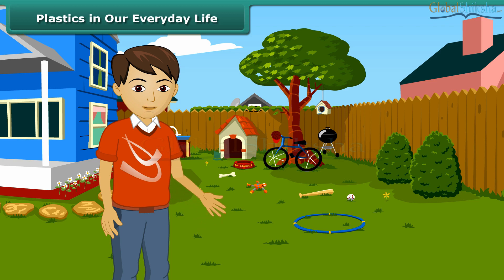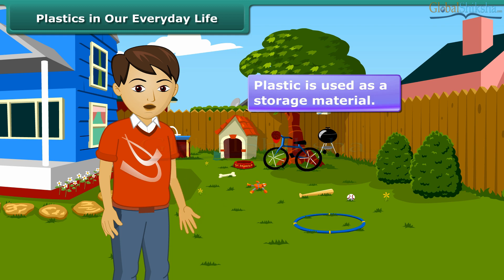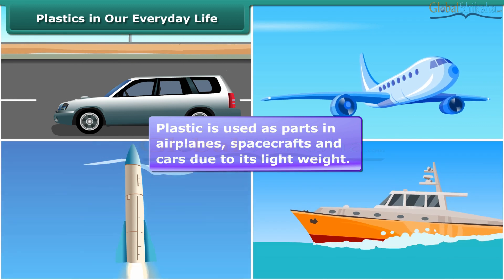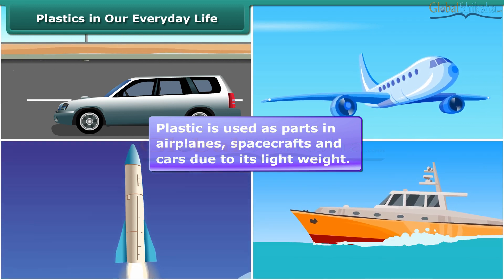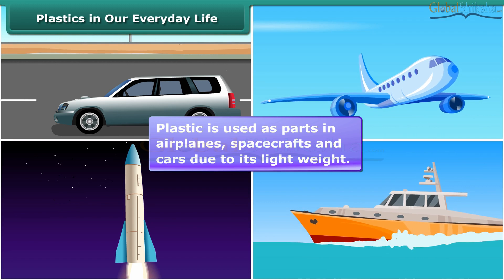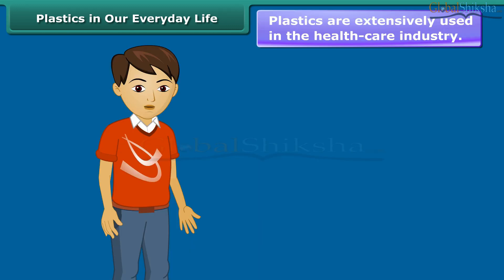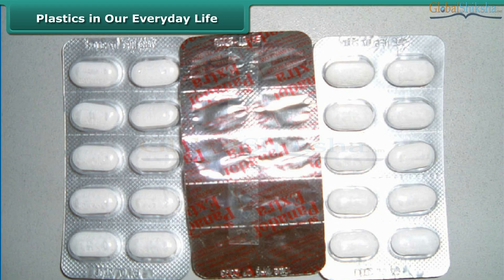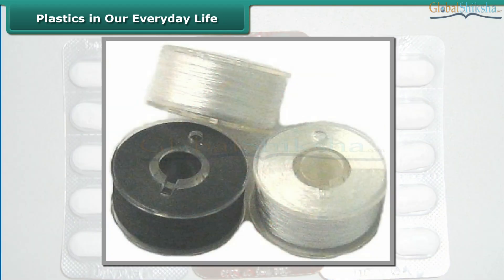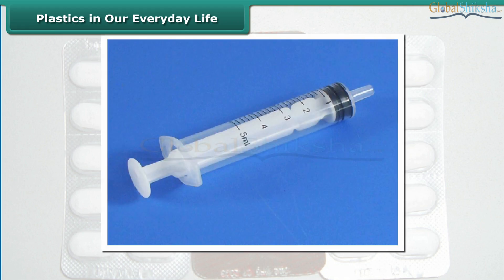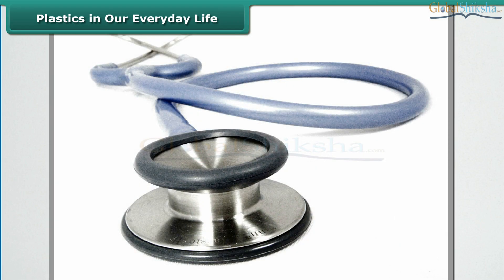Not even a single day passes when we haven't seen or used an object made of plastic. It has taken so much prominence in our lives due to a number of its properties which make it convenient to use. It is used as parts in airplanes, spacecrafts and cars due to its light weight and strength. These are extensively used in the healthcare industry for packaging of tablets, as threads used for stitching wounds, syringes, doctor's gloves and a number of medical instruments.